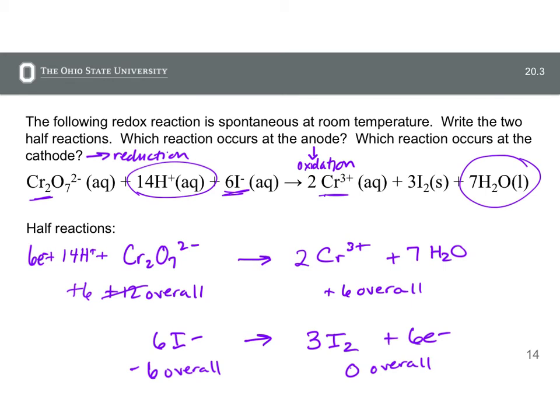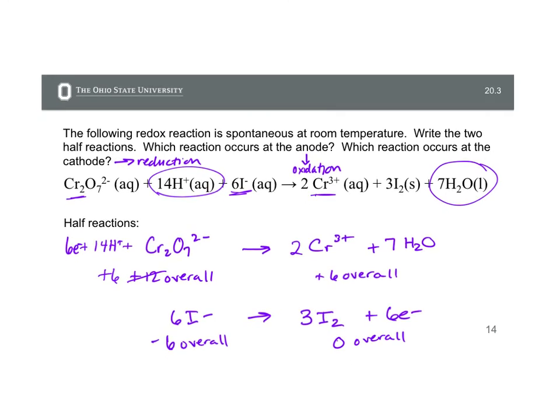So it should work out when you have a balanced redox reaction that you end up with the same number of electrons in each half reaction. And the reason I went through all of this is because I wanted to know what number of electrons those were going to be and figure out which side of the equation they were on. And now we can more easily figure out where reduction is occurring and where oxidation is occurring.